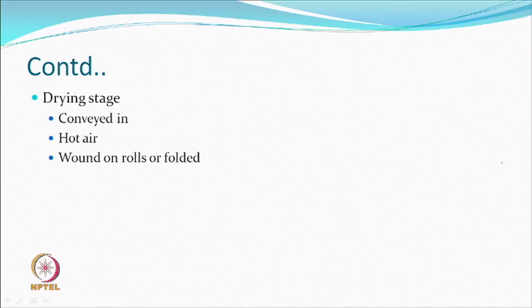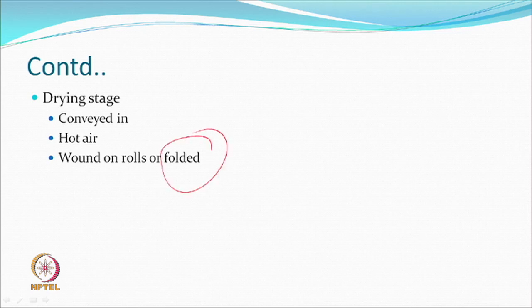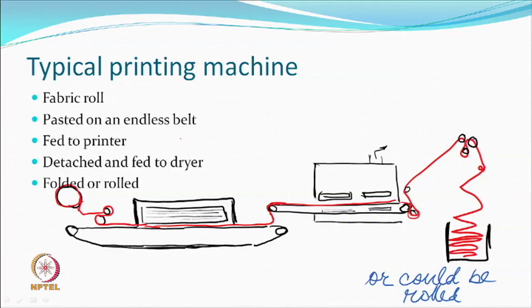After printing, the fabric is taken off the conveyor and dried before post-printing operations. It can be wound on rolls or folded. Hot air is generally used to dry, because most inks may be aqueous. Solvent-based inks dry faster. For hydrophilic fabrics, aqueous systems are preferred, and some ink penetration into the fabric depth may be desirable.